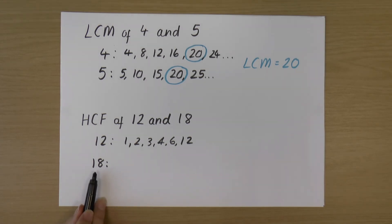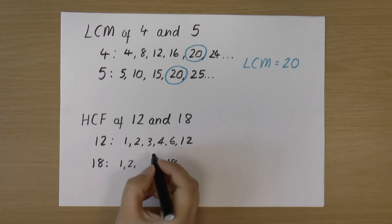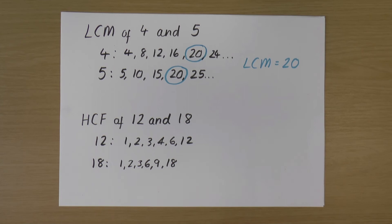So factors of 18, we do 1 times 18, we do 2 times 9, and we do 3 times 6. So those are the factors of 18.